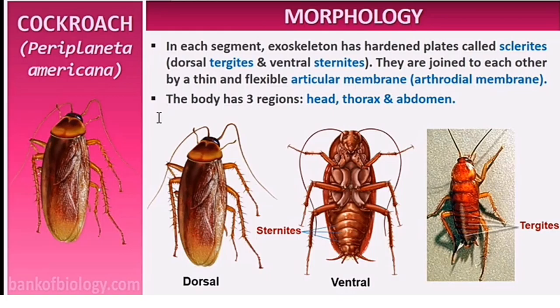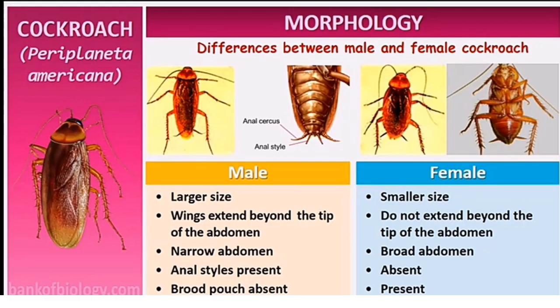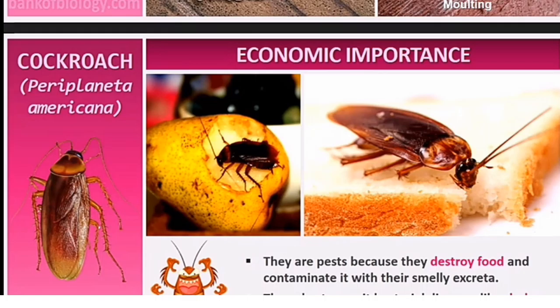The cockroach body has three regions: head, thorax, and abdomen. The head is triangular. The thorax has jointed legs. Males have large wings that extend beyond the abdomen, while females have narrower wings. The cockroach lives in tropical regions and produces a smelly secretion when disturbed.